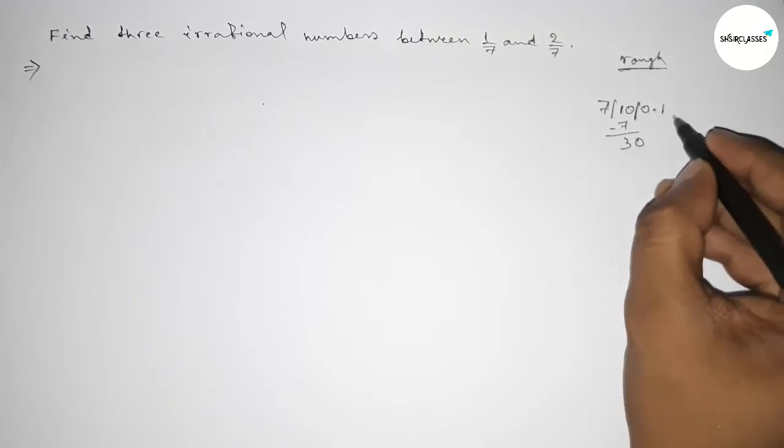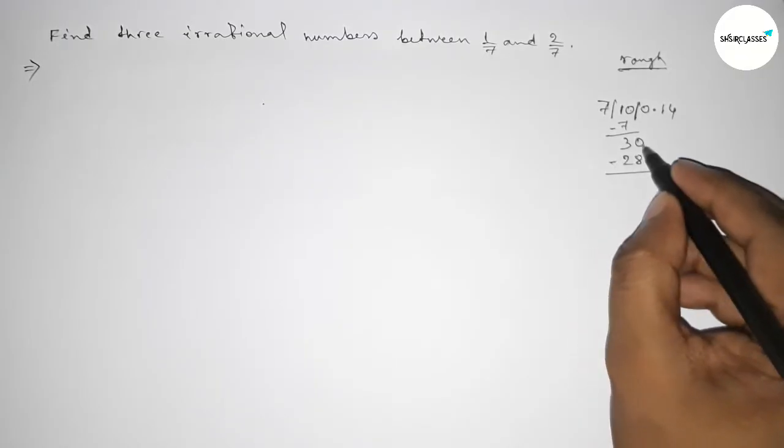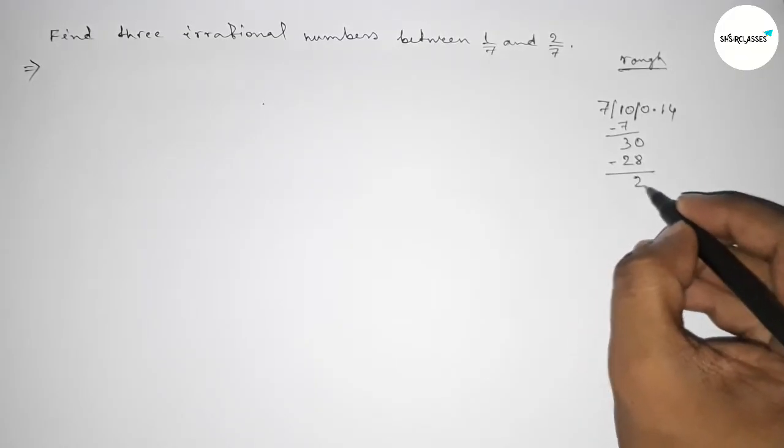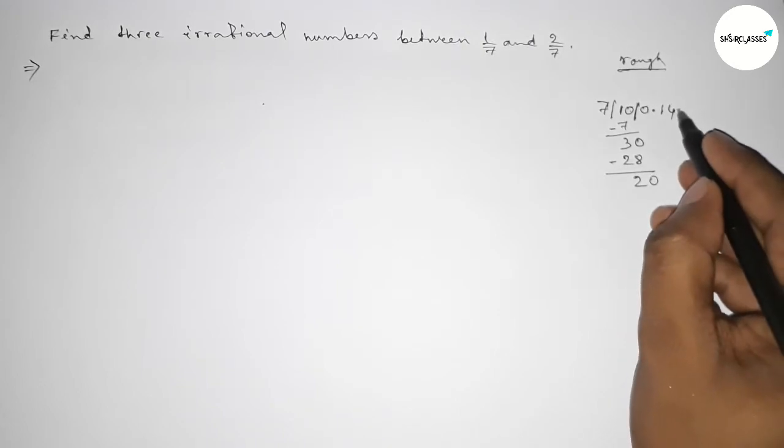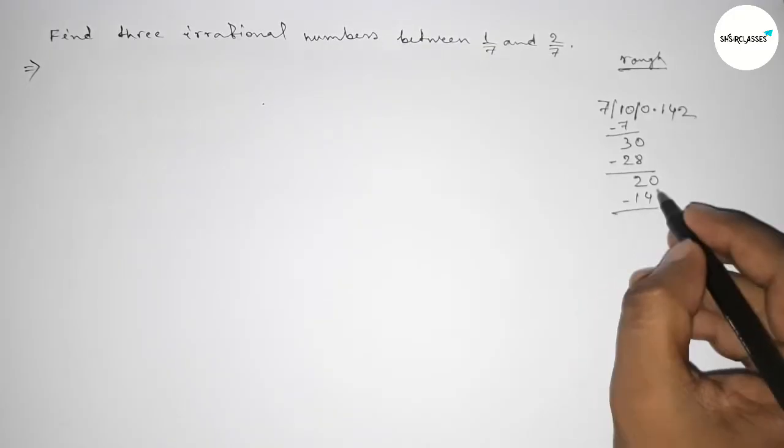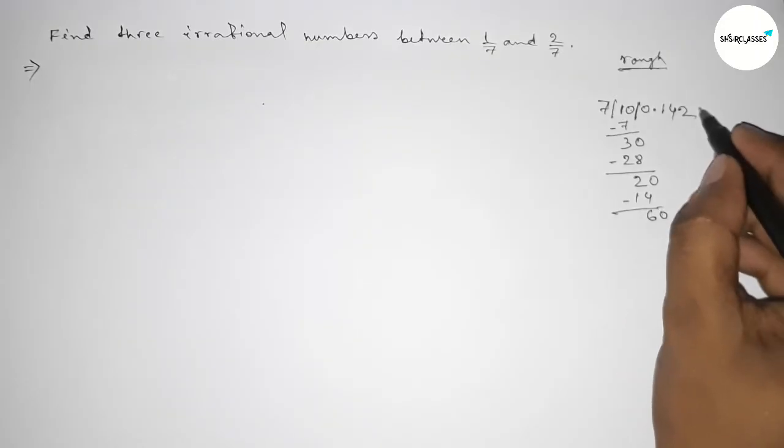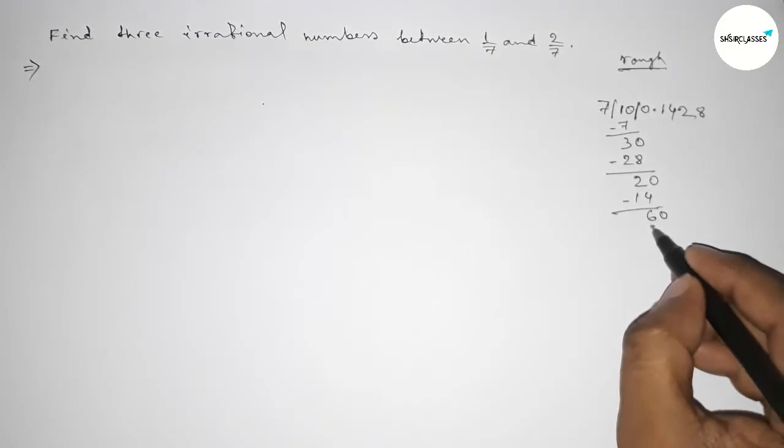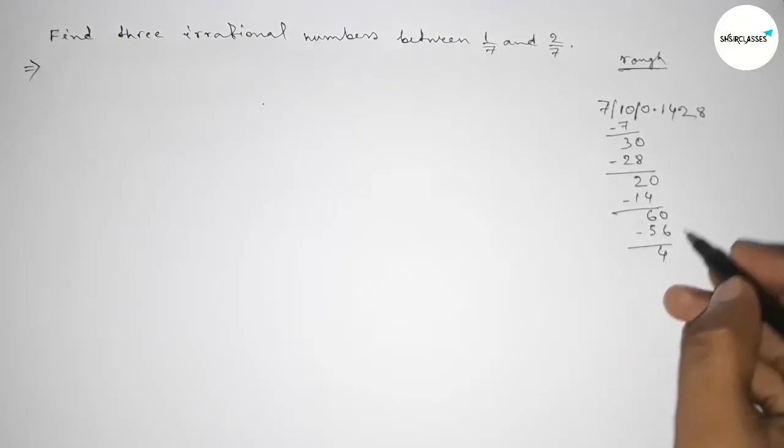Now 7 into 10 is 7, subtracting gives 0. Similarly, for the next point we get 0. 7 into 40 is 28, subtracting gives 2. For the next point we get 0. 7 into 20 is 14, subtracting gives 6.